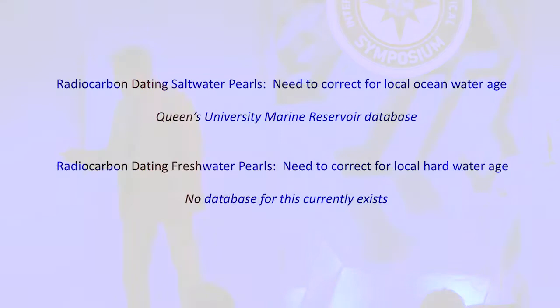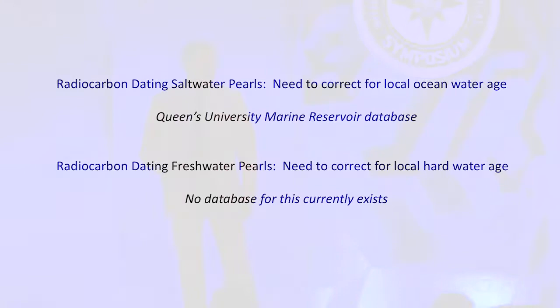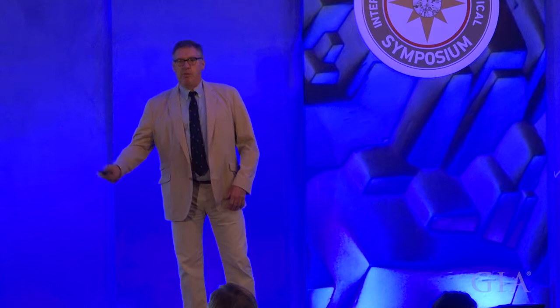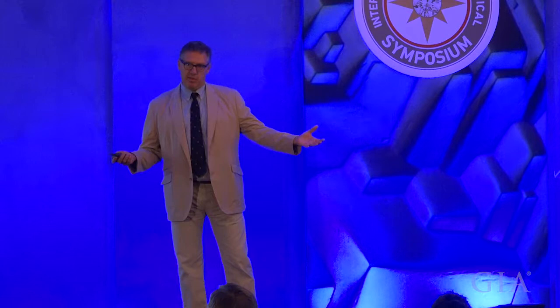For radiocarbon dating saltwater pearls, we need to know the correction for local ocean water, and we have a pretty good database already because of the long history of dating coastal environments. For freshwater pearls, you need to correct for the possibility of a hard water age effect, but there's no database that exists for that yet. That's not to say it can't be assembled — the history of pearl locations is well known to many in this room, and it should be possible to look for natural history collections, hobby collectors, or industry people who have collected shells in the past, to establish reservoir ages in river and lake environments.